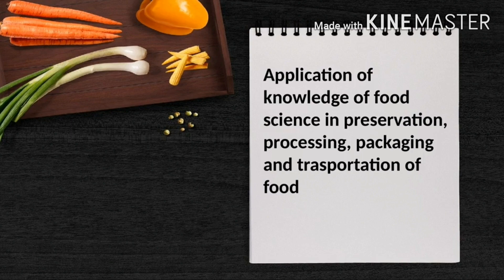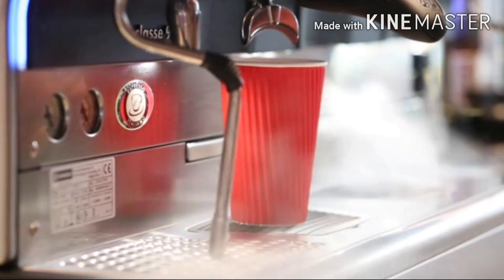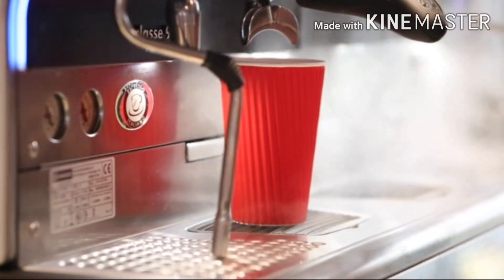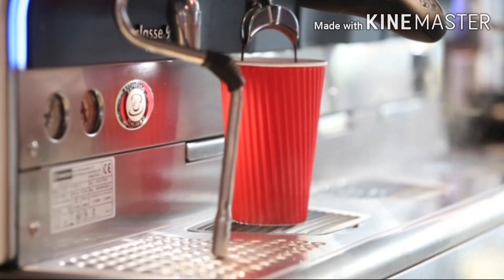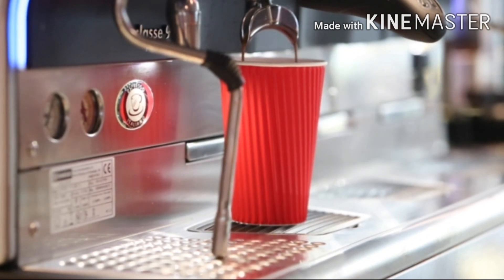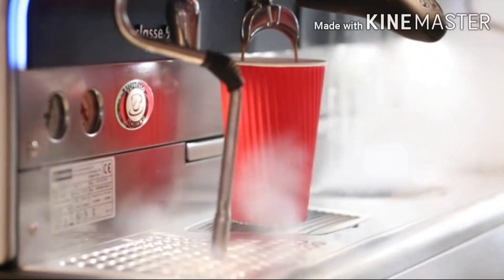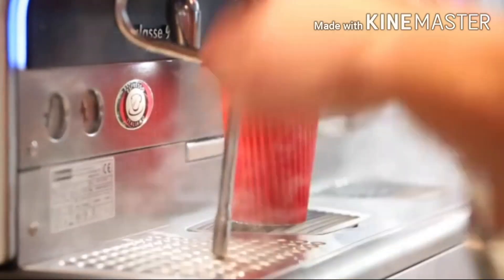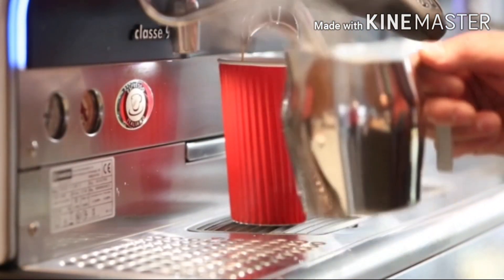The next topic we will be discussing is food engineering. But before moving ahead, take a look at this coffee making machine — this is an excellent example of how technology can be applied to food. Here, highly pressurized water reaches the boiler where it is heated to its boiling point and moves towards the brew head to extract maximum flavors for the perfect cup of coffee.